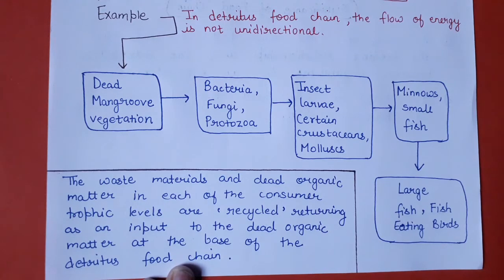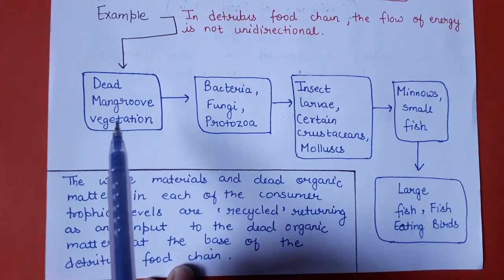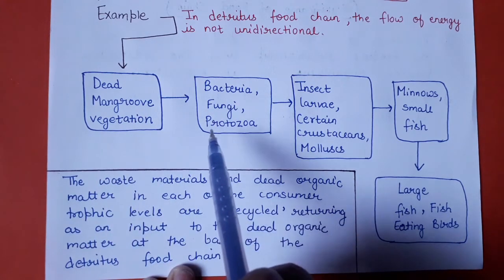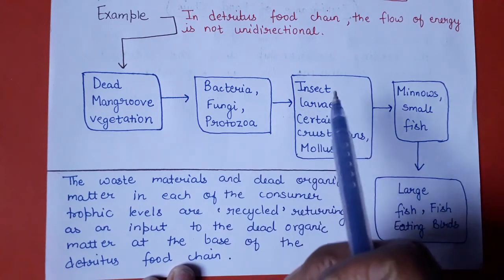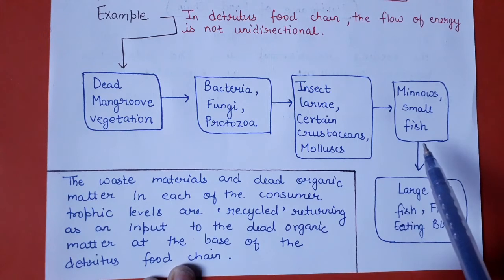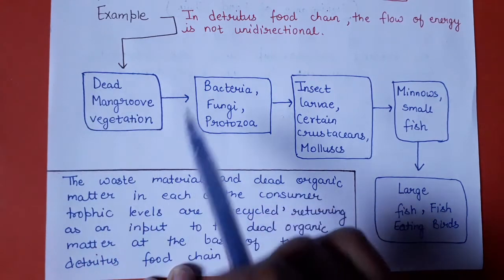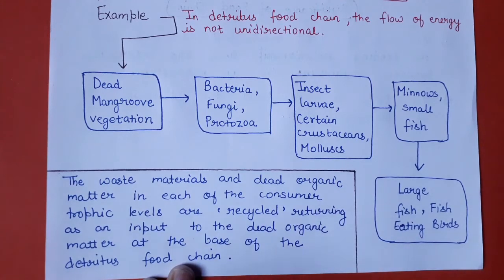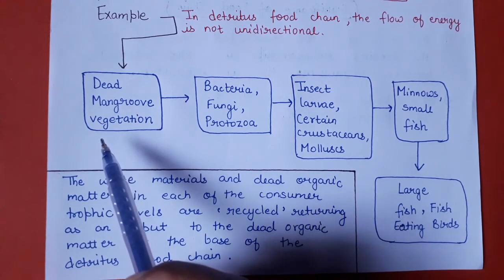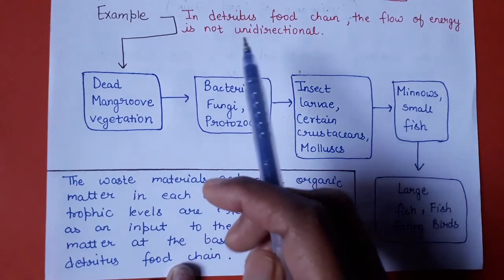Detritus food chain ka example: ye mangrove vegetation se start ho raha hai — dead mangrove leaves par bacteria, fungi aur protozoa grow kar rahe hain aur use decompose karne ki koshish kar rahe hain. Iske baad insect larvae, kuch crustaceans aur mollusks in par feed karte hain. Phir small fishes hain, aur small fishes par large fishes feed karengi; fish-eating birds bhi small fishes par feed karengi. Is tarike se detritus food chain chalti hai — shuru hamesha dead aur decaying organic matter se hoti hai, isliye ye grazing aur parasitic food chain se different hai.